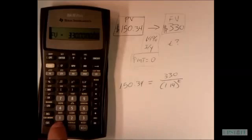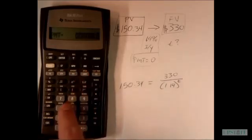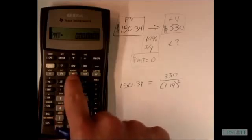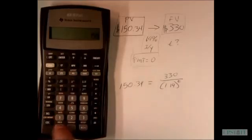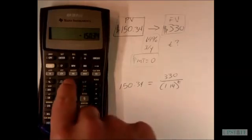Then we have present value which is 150.34. What do we have to do with that? We have to enter that as a negative, otherwise it's going to show us an error. So we enter that as a negative and we hit present value.